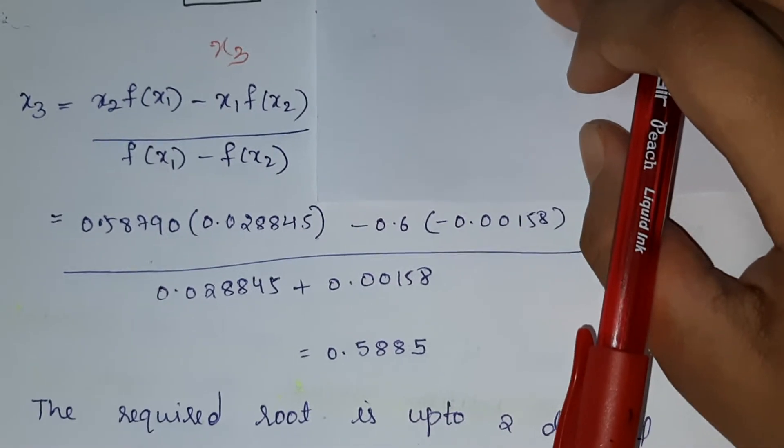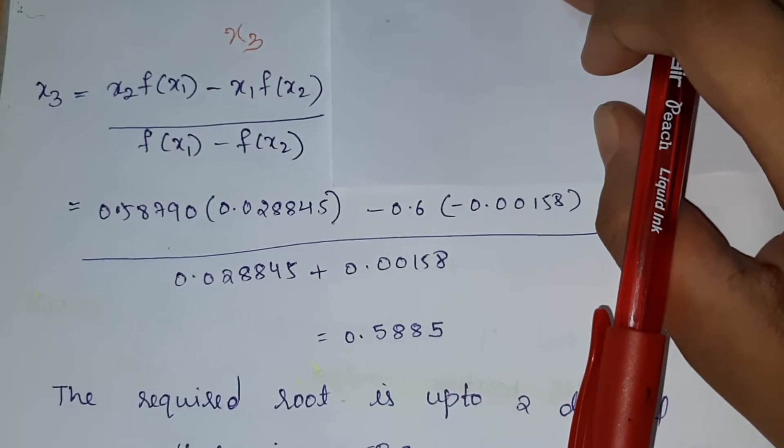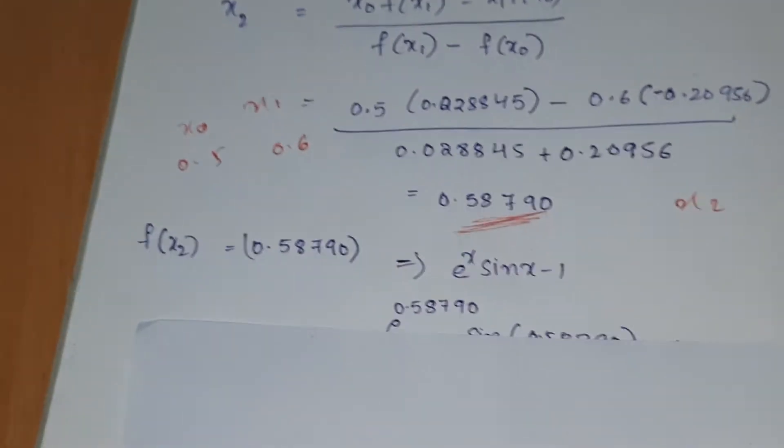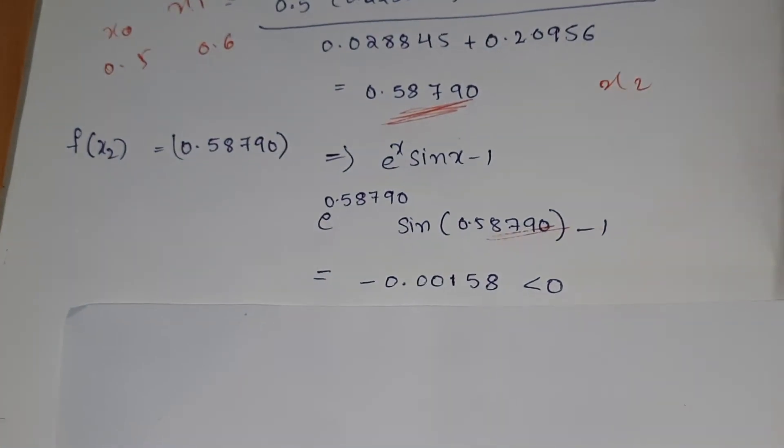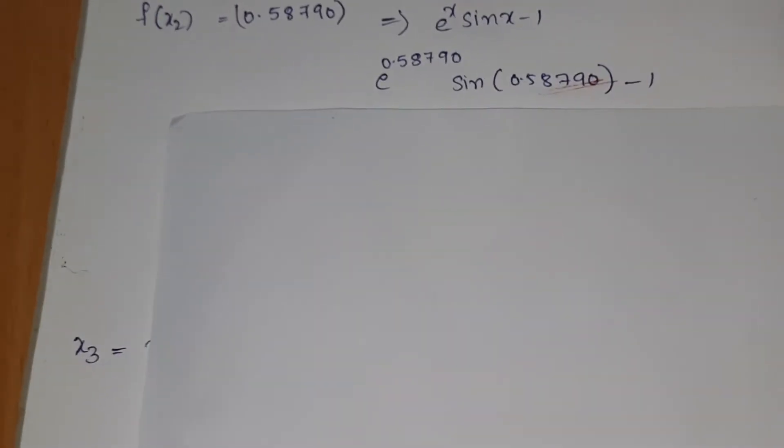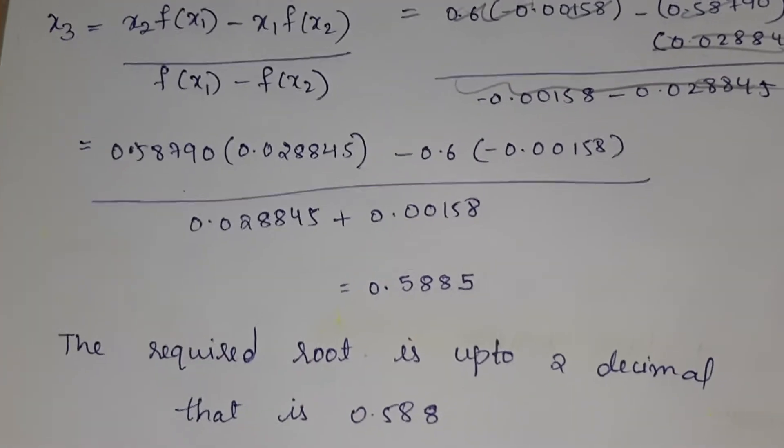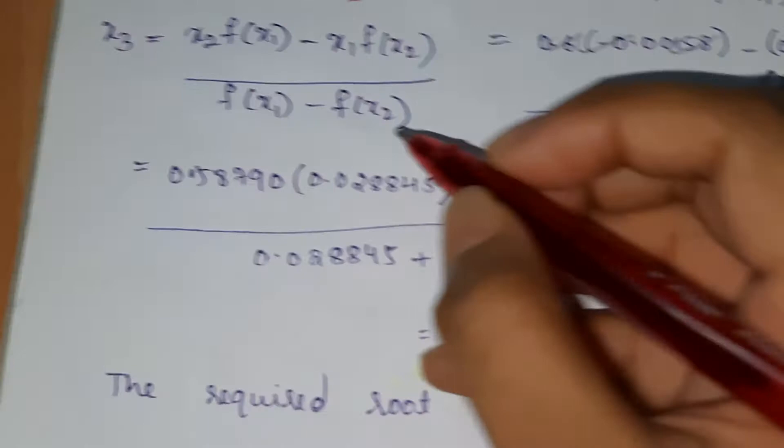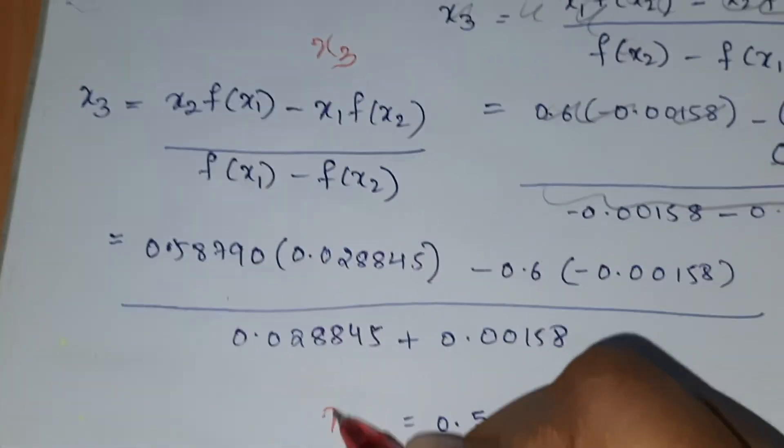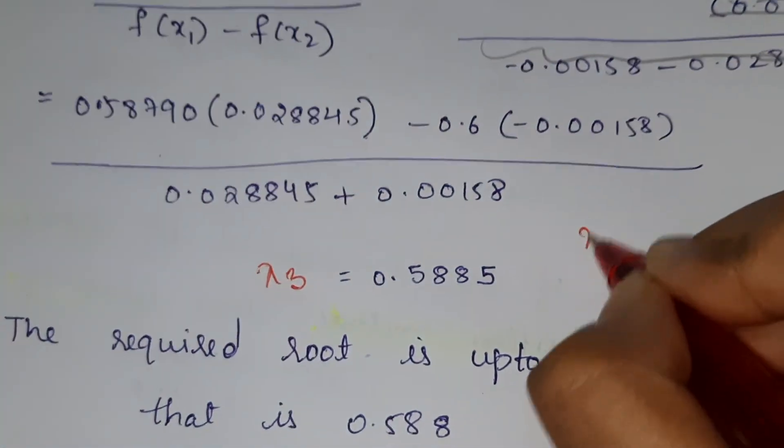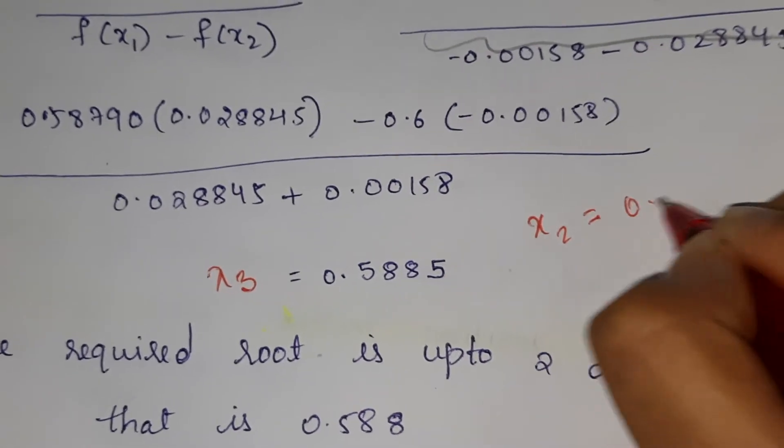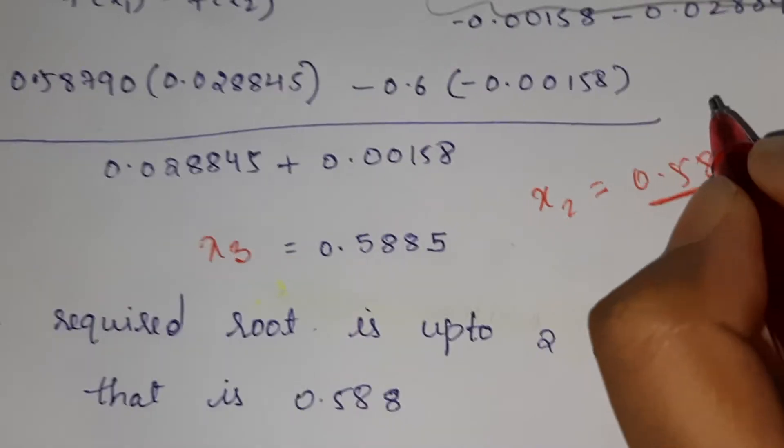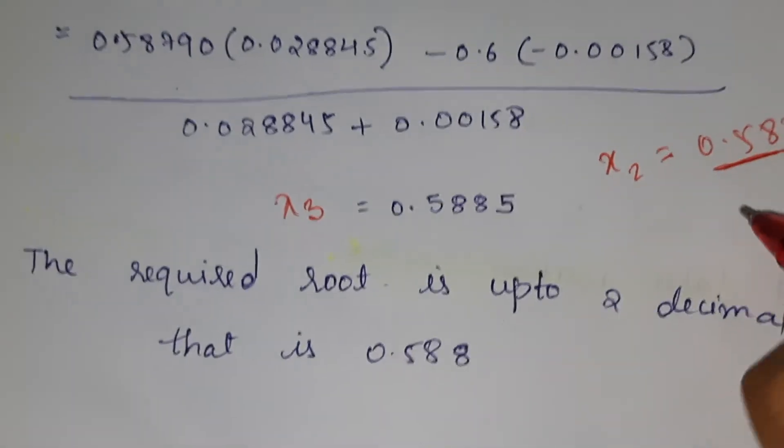From here we found the values. Substitute them and you will get 0.5885. This is x3, and x2 is 0.58790. Up to two decimals is enough, so the root is 0.58. That's where the problem ends.